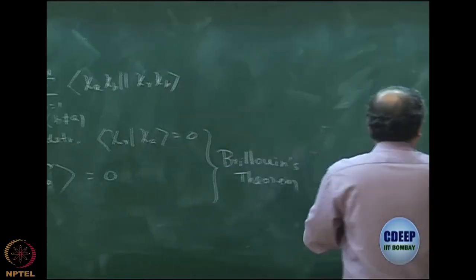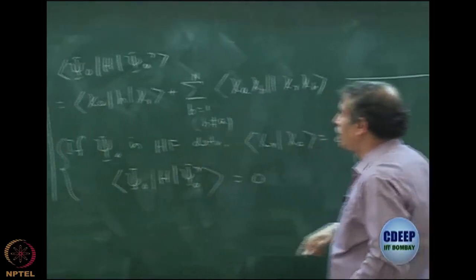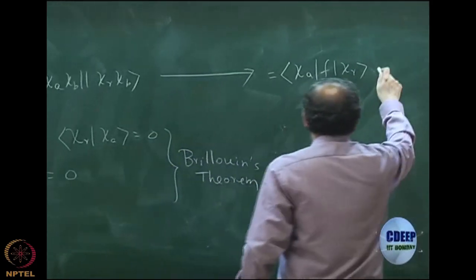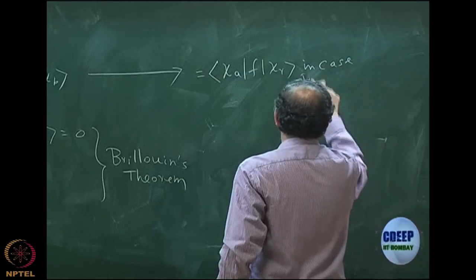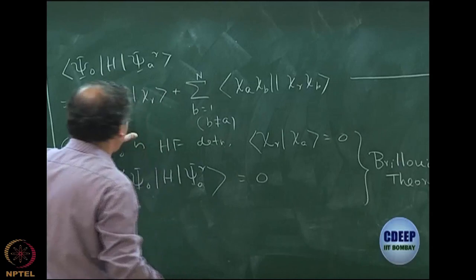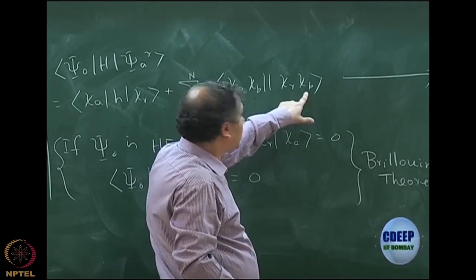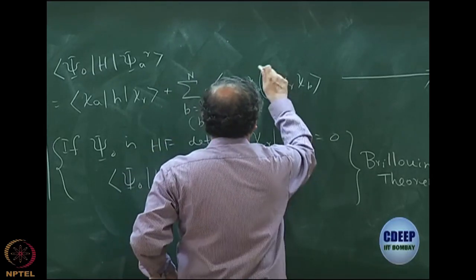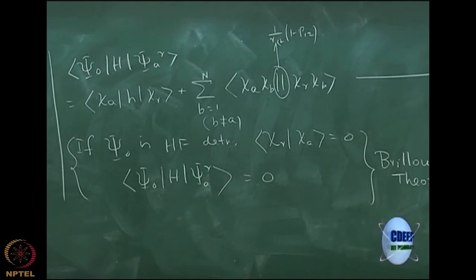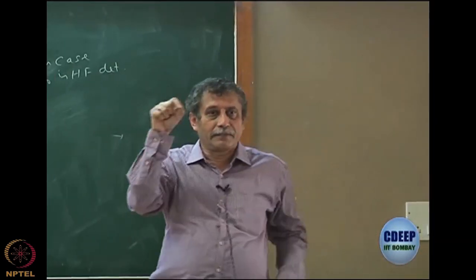The proof: in case ψ₀ is Hartree-Fock, the general expression ⟨ψ₀|H|ψₐʳ⟩ is nothing but ⟨χₐ|f|χᵣ⟩. We defined the Fock operator f as h plus the sum over b of the partial integration over dτ₂ of χᵦ*(2)(1/r₁₂)(1 − P₁₂)χᵦ(2). The double-bar antisymmetrized notation always contains this 1/r₁₂ times (1 − P₁₂) factor.